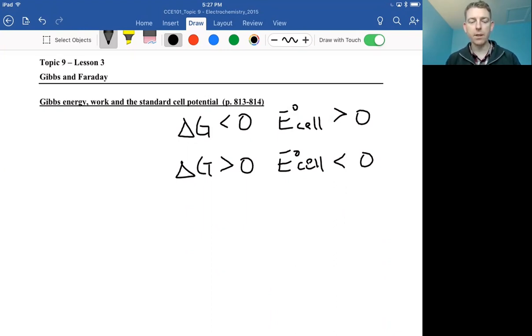And of course, when either of these are equal to zero—delta G or the standard cell potential—then we're at equilibrium and nothing is happening anymore. Your battery is dead or your reaction is done happening.